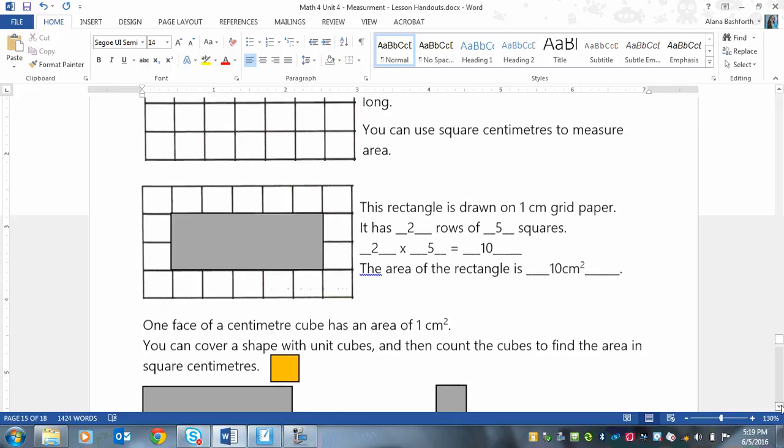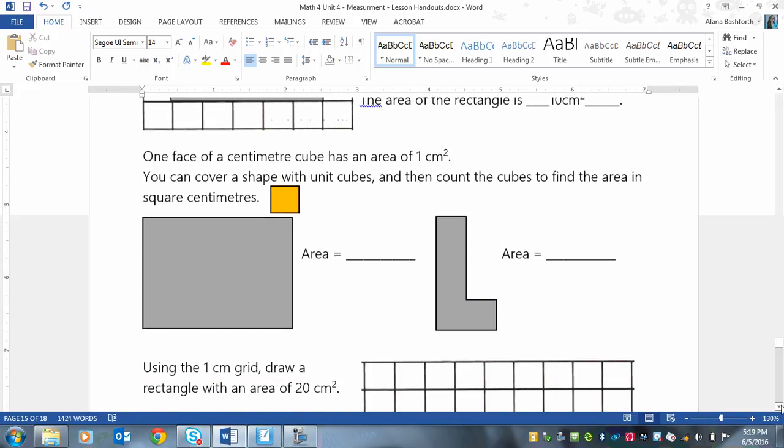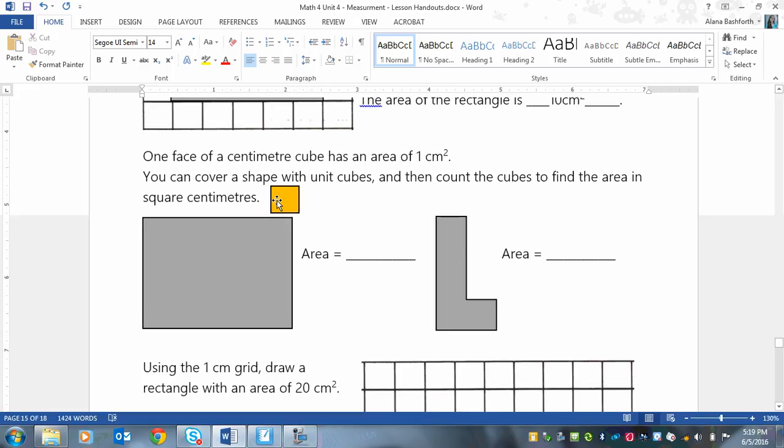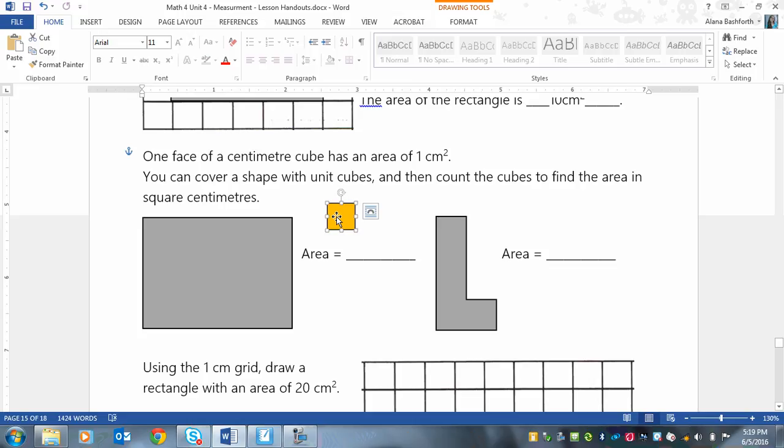Now, it says one face of a centimeter cube has an area of one centimeter squared, and those are those little colored ones that don't link together. You can cover a shape with unit cubes and then count the cubes to find the area in square centimeters. These really are exactly one centimeter, but we'll just assume that they are right now for the purpose of this lesson.